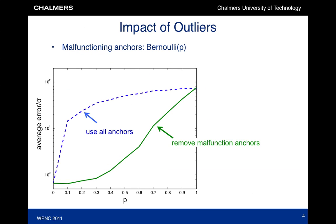Let us now evaluate the impact of outliers on least squares positioning. We have generated one agent and ten anchors. Anchors are malfunctioning with a probability p. This figure shows the average positioning error as a function of p. We see that when we fuse the information from all ten anchors, severe degradations are incurred, even for small p. When discarding malfunctioning anchors, we achieve good performance for p less than 30%. This is exactly the range of p for which we aim to develop algorithms.